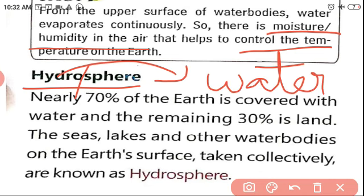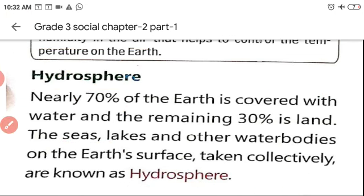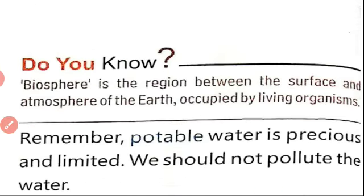Next, after lithosphere and atmosphere, the third one is hydrosphere. 'Hydro' means water. 70% of the earth is covered with water. The water bodies — seas, lakes, oceans, rivers, ponds, and wells — all come under the hydrosphere.